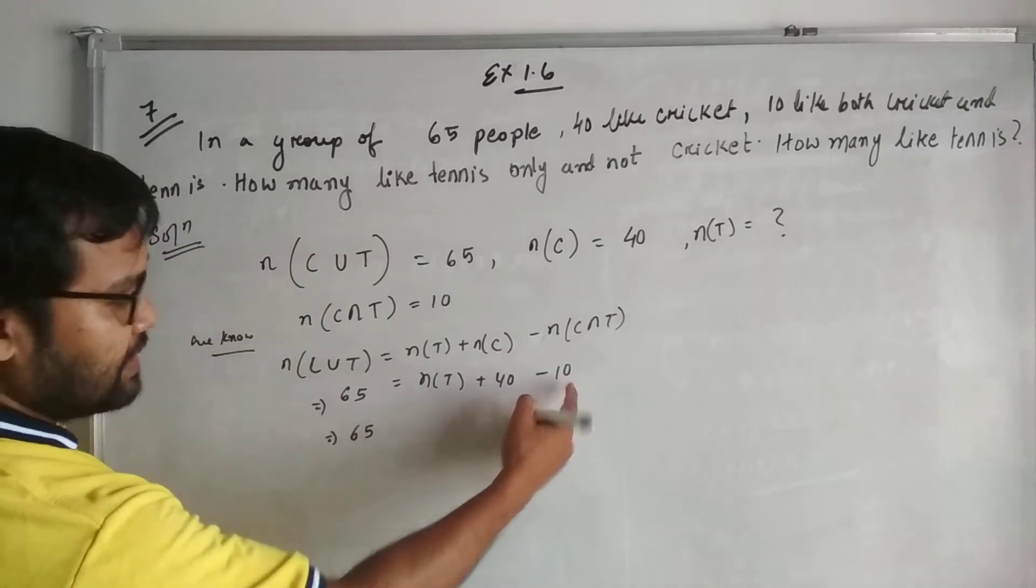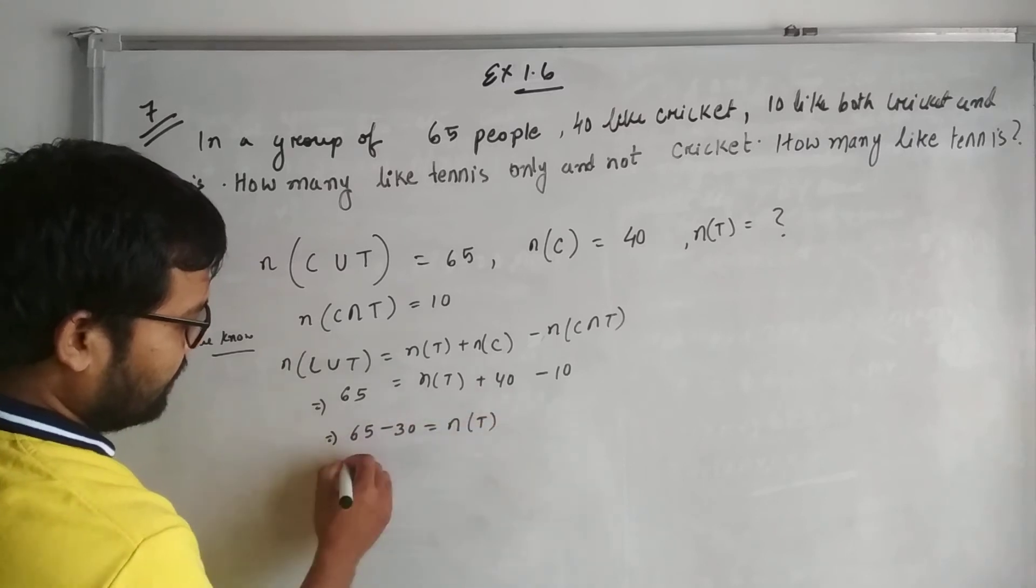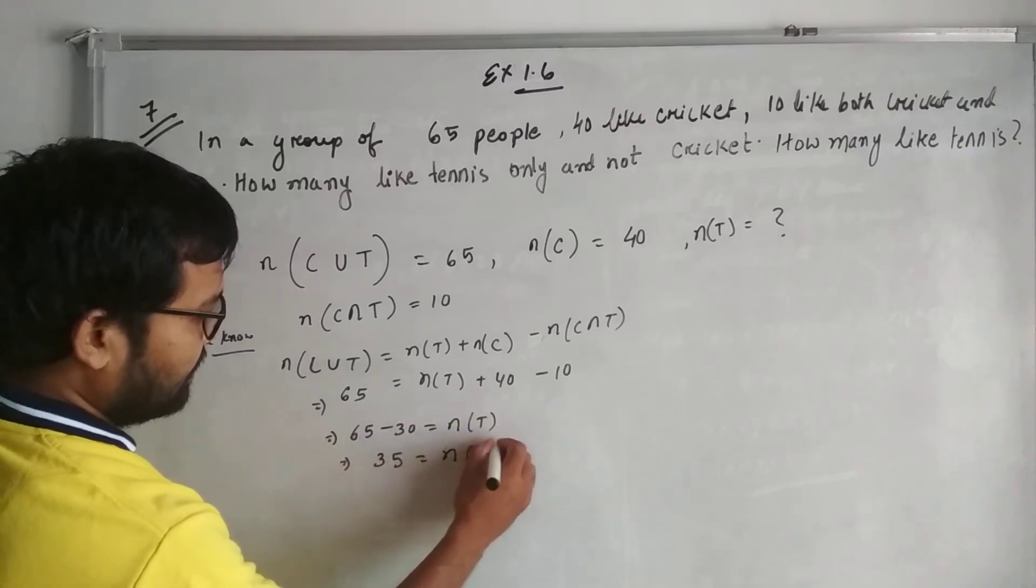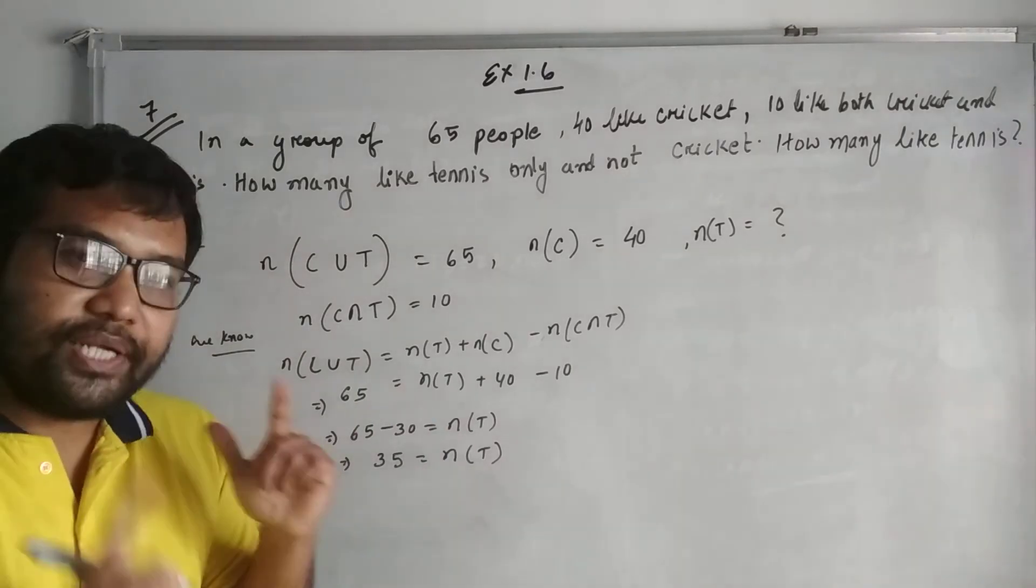So 65 = n(T) + 30. Therefore n(T) = 35. The number of people who like tennis is 35.